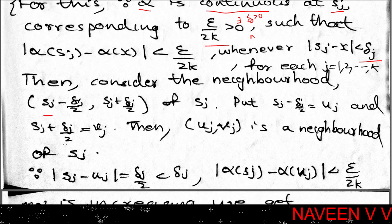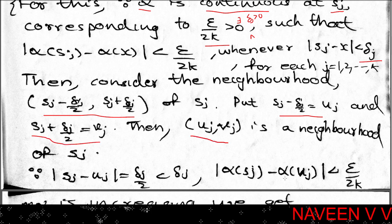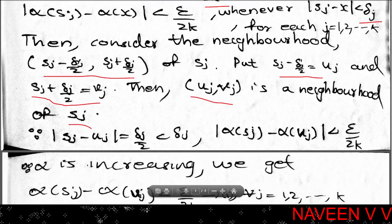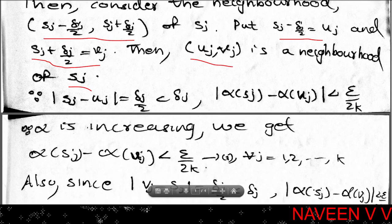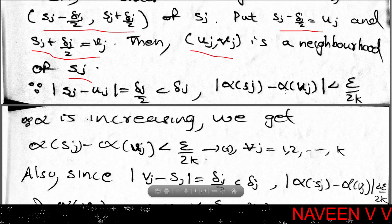For each point s_j, consider the open interval (s_j minus delta_j / 2, s_j plus delta_j / 2). Set u_j equal to s_j minus delta_j / 2 and v_j equal to s_j plus delta_j / 2. Then the open interval (u_j, v_j) has s_j as its center with radius delta_j / 2, which is less than delta_j.